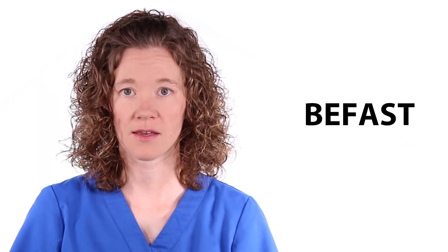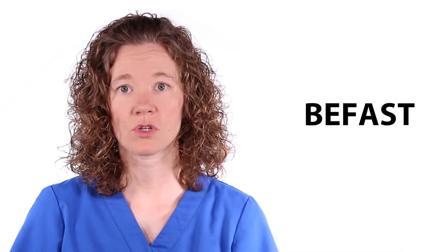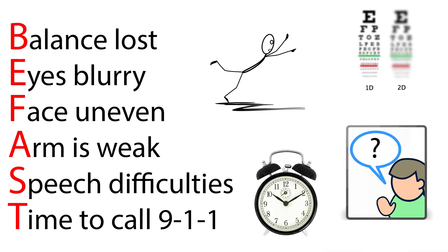Knowing the signs and symptoms of a stroke can be lifesaving. You can remember the classic stroke symptoms with the acronym BE FAST, in which each letter stands for a sign you should watch for in a stroke victim. B for balance — there is a loss of balance, headache, dizziness, or confusion. E for eyes — blurred vision, as the eyes are not receiving enough oxygen for optimal functioning.